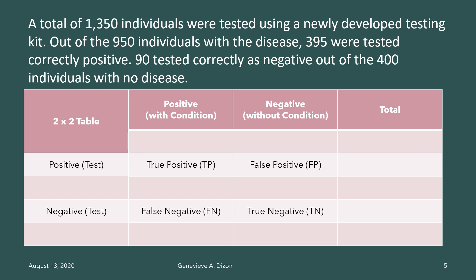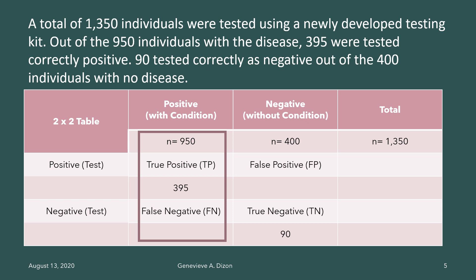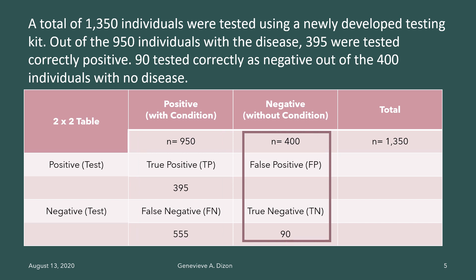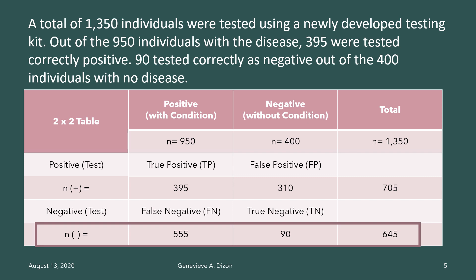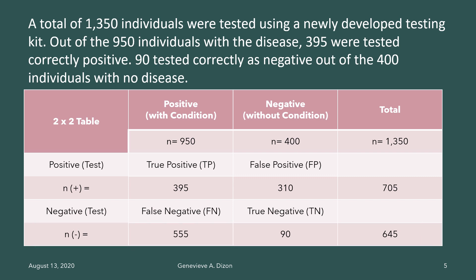Going back to the example, the first statement gives the total number of individuals tested, which is 1,350. The total number of sick individuals is 950, and out of these 950 sick individuals, 395 tested positive. The last statement gives 90 individuals that tested correctly as negative from a total of 400 healthy individuals. To complete the first column, we subtract 395 from 950 to get 555. The second column: subtract 90 from 400 to get 310. The total number of test positives is 395 plus 310, giving 705. The total number of negative tests is 555 plus 90, giving 645. That completes all the data needed for the 2x2 table.